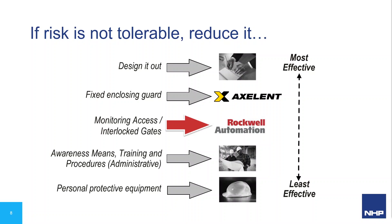The most obvious and most effective measure is to design your machine so it doesn't have the risk. But most of the time we don't have that luxury. So you can put in place some fixed guarding, which keeps people away from the hazard. But people need to access parts of the machine, so some guards should be removable — while monitoring whether the guard is in place so we can prevent dangerous actions when the guard is off.